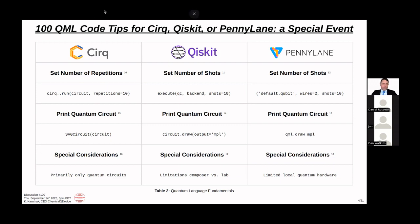This is quantum language fundamentals. For CIRQ, they don't use shots — they use repetitions. You'll see CIRQ.run of the circuit with repetitions equals 10. It's similar to shots but a little different. For Qiskit, setting shots equals 10 works for simulators and real hardware. For PennyLane, it's a bit more verbose but shots equals 10 in this specific case.